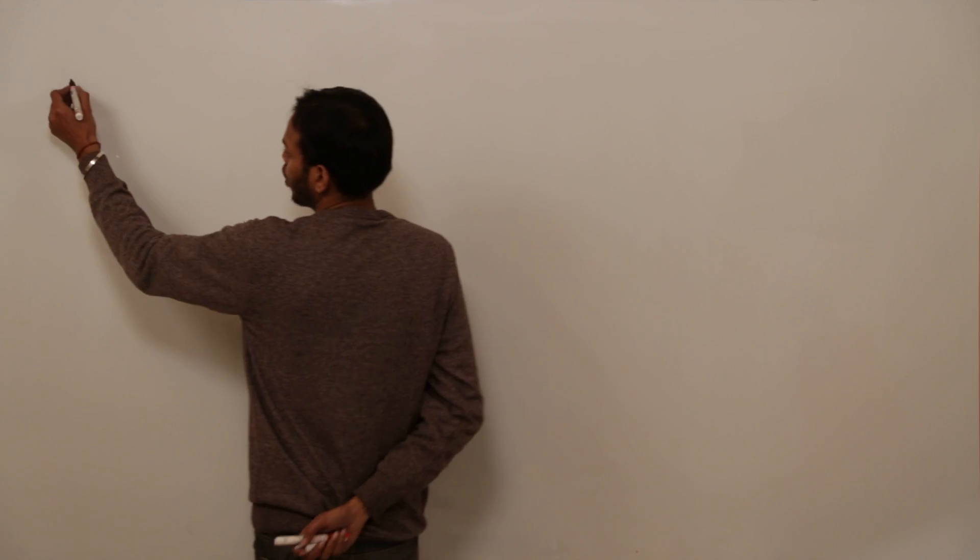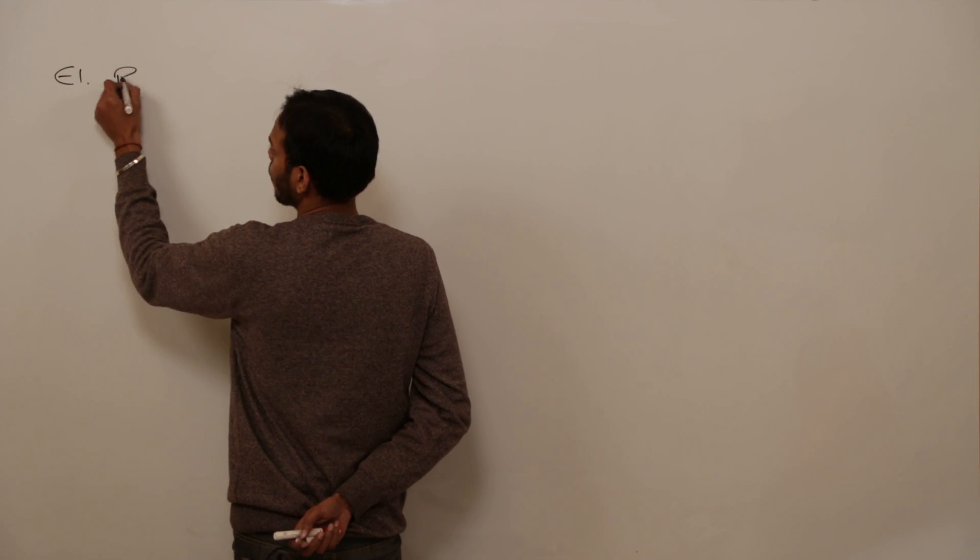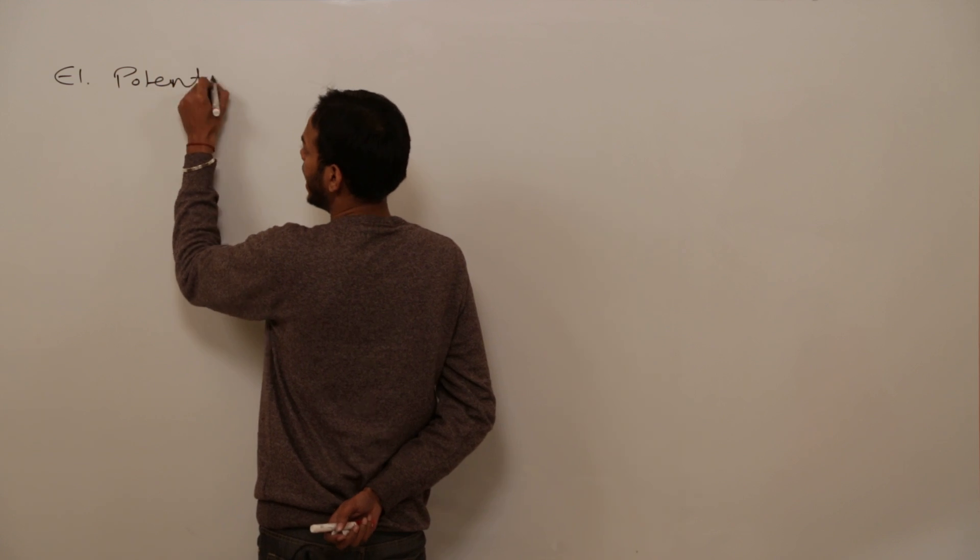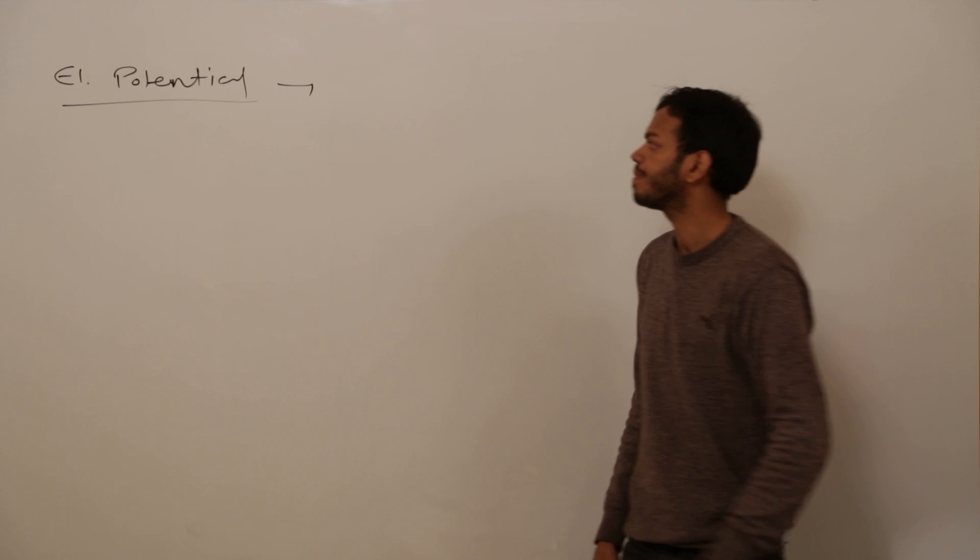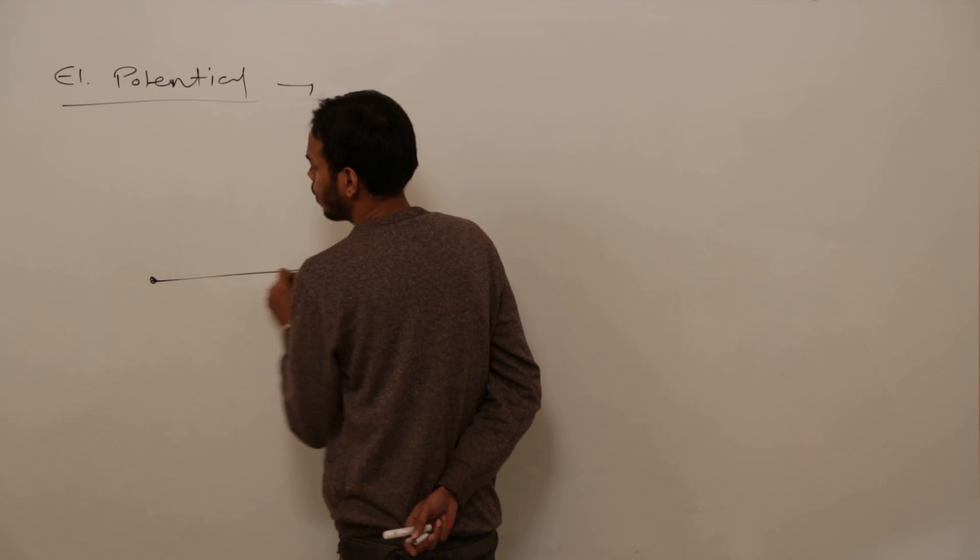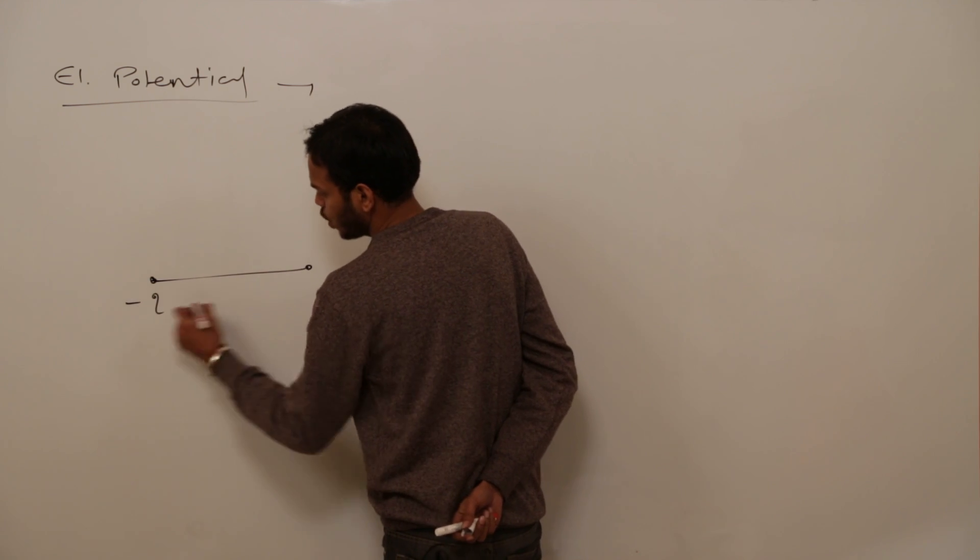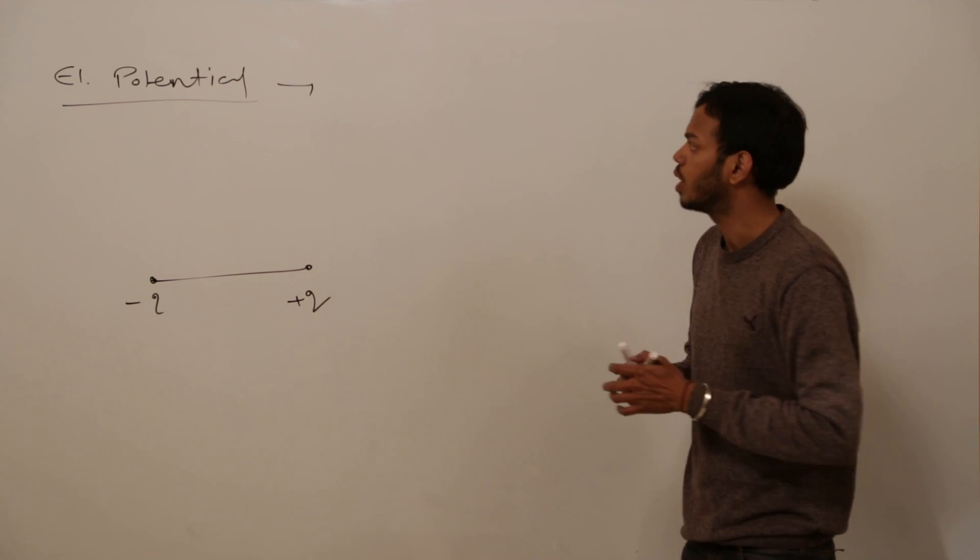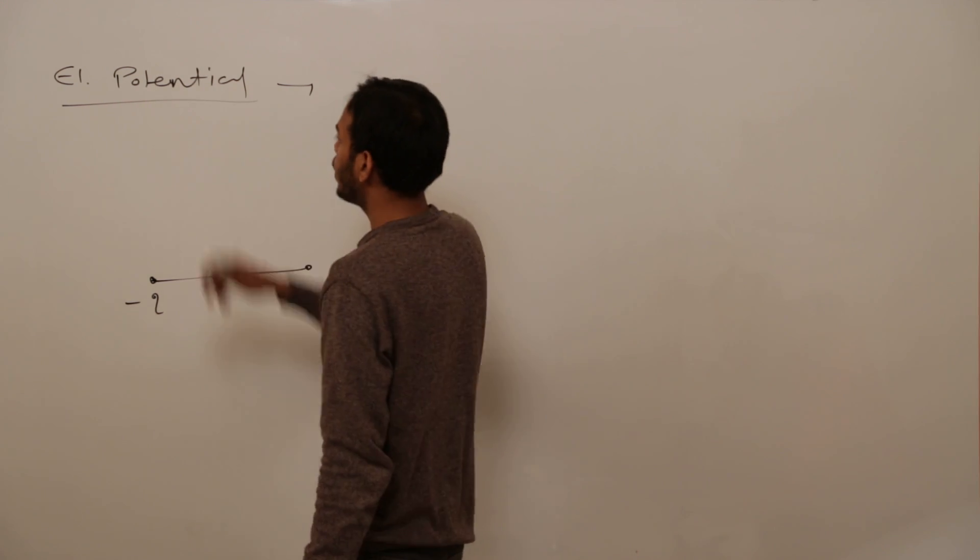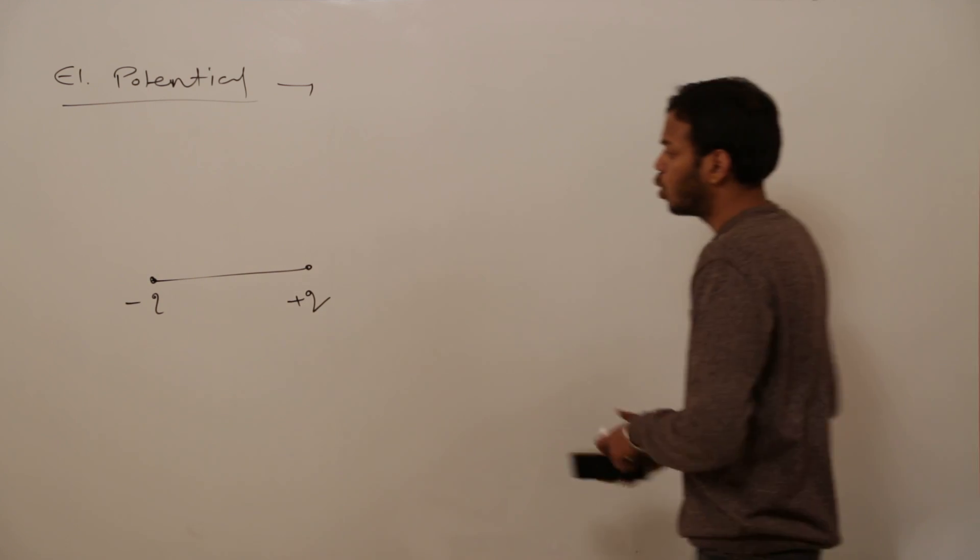Moving on to electric potential. Is there any surface left for which we have to still find out the value of electric potential? There is the system of charge which is minus q and plus q and you call it by name electric dipole. So we will be finding out the value of electric potential for electric dipole.